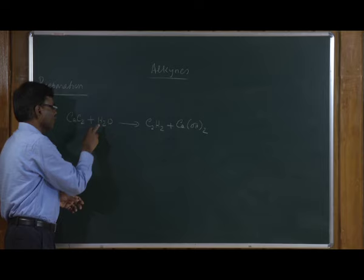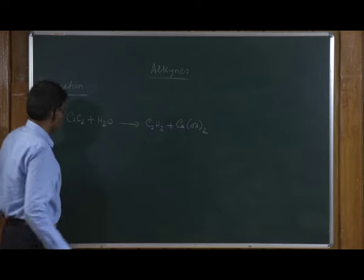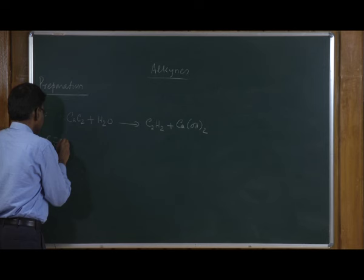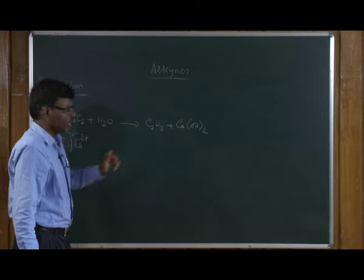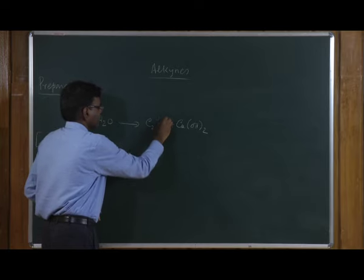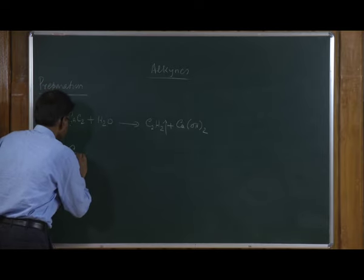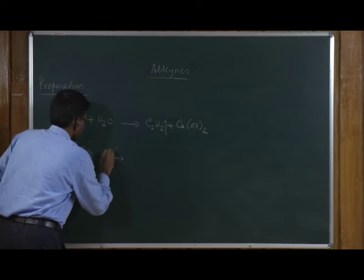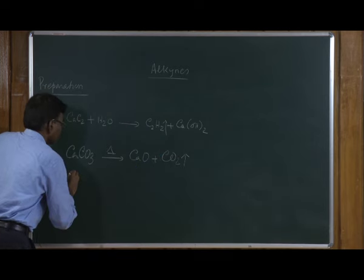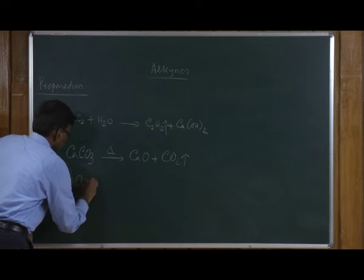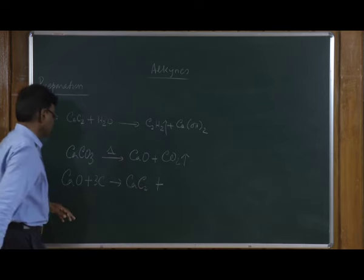Calcium carbide is a solid compound. When you treat it with water, you generate ethyne as a gas. Calcium carbide itself is produced from calcium carbonate: heating calcium carbonate gives calcium oxide plus carbon dioxide, and then reacting calcium oxide with carbon generates calcium carbide and carbon monoxide.